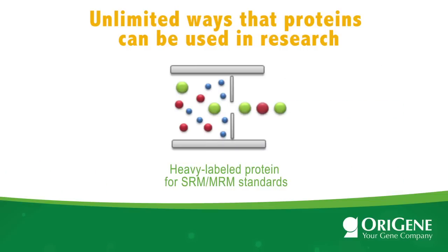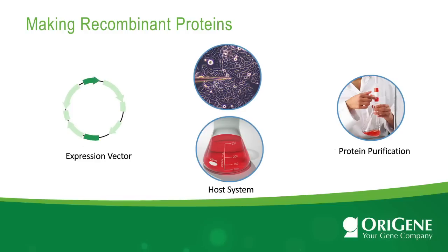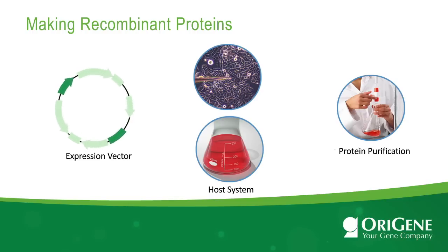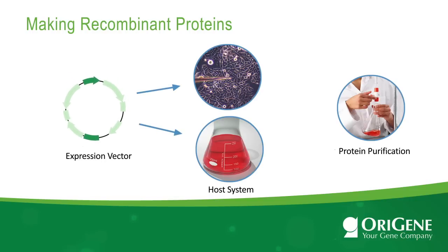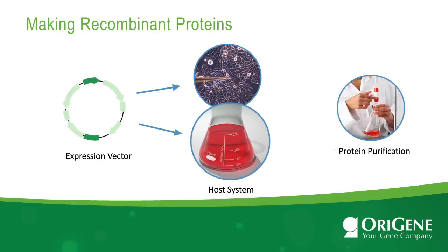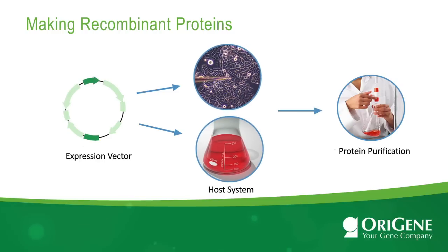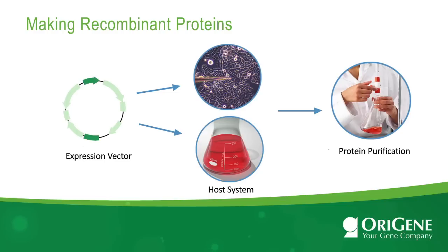Heavy isotope labeled proteins can be used as standards for quantitative mass spectrometry, MRM, and SRM. Several key elements are needed for the production of a recombinant protein: first, the appropriate expression vector containing the encoded gene with proper transcriptional and translational control; second, the proper expression host, a cell system for protein synthesis and modification; and third, the optimal protein purification scheme.